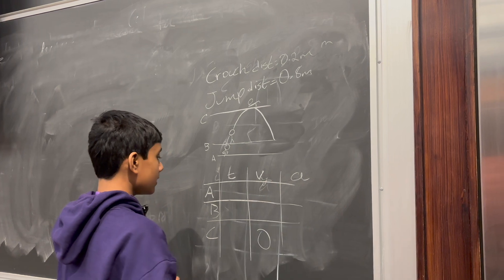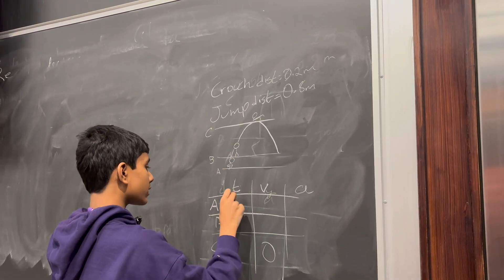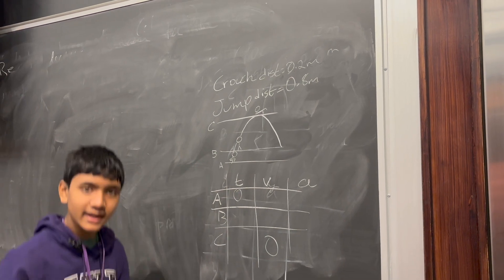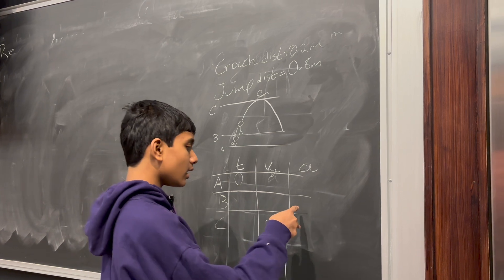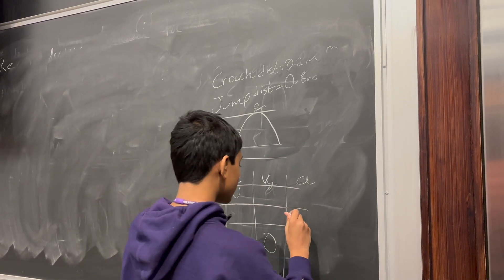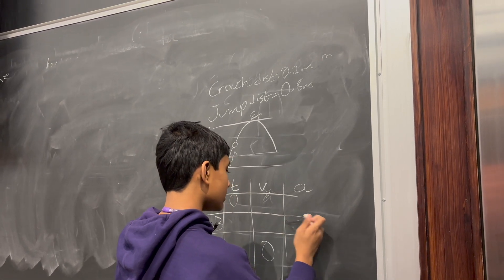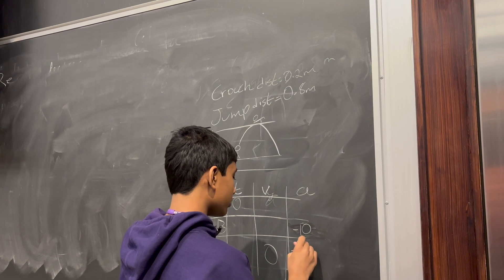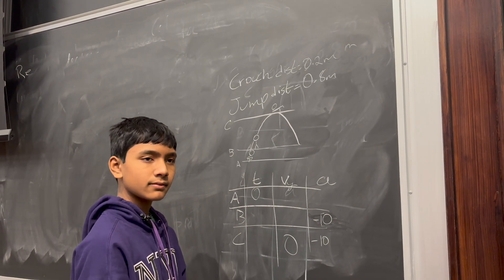Meanwhile, here at A, we know the time is 0 because that's the instant we jump off the ground. And, for these other two, we know that the net acceleration is simply going to be G, negative 9.8, or in this case, to make it... That's not negative 10 at B. That's A.